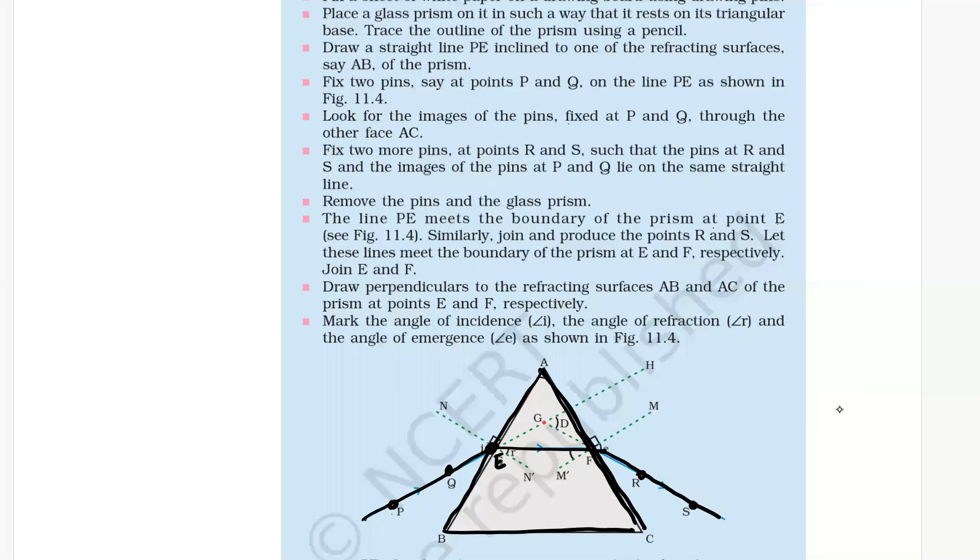Let the line RS meet the boundary of the prism at point F. Join E and F. Now we have to draw normals.